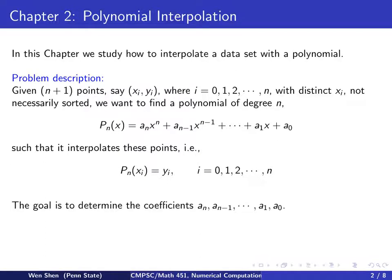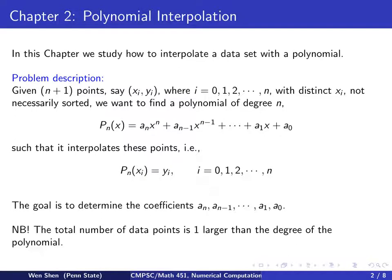So the goal for the problem now becomes the following. We need to determine the coefficients a0, a1, an-1, an for the polynomial. So counting them, we see that we have exactly n plus 1 unknowns. So pay attention here. If you have a data set with a certain number of points, then you shall fit in a polynomial of degree exactly one less than the total number of points in your data set.